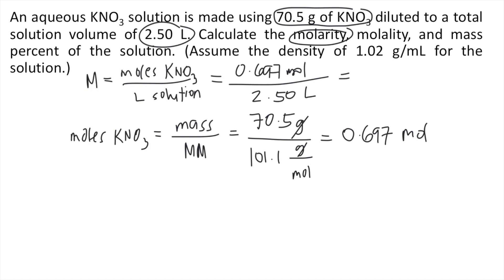So solving that in your calculator, 0.697 divided by 2.50. And this will give you approximately 0.279 if we round off. And the unit would be moles per liter.